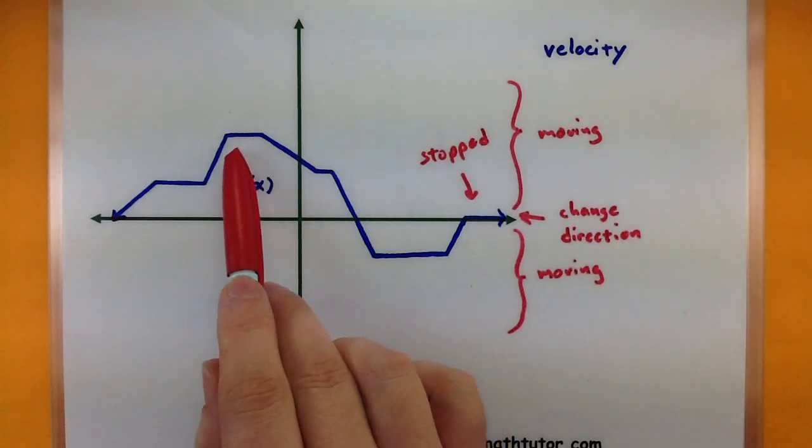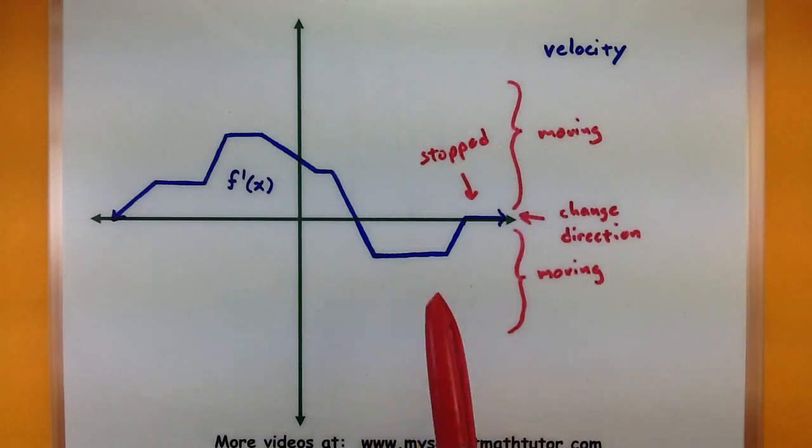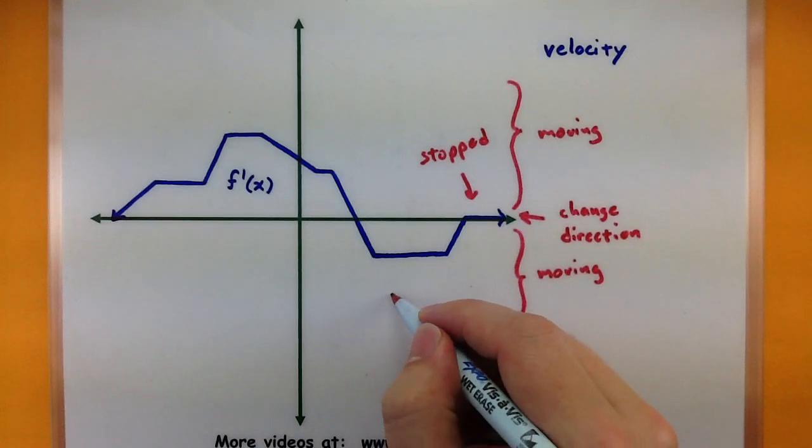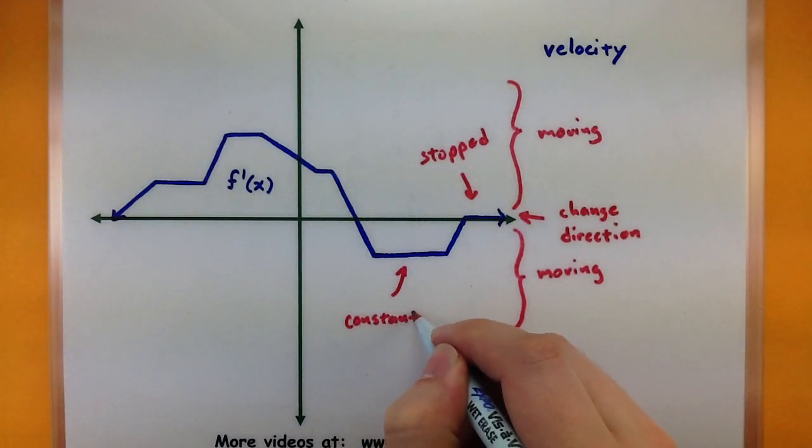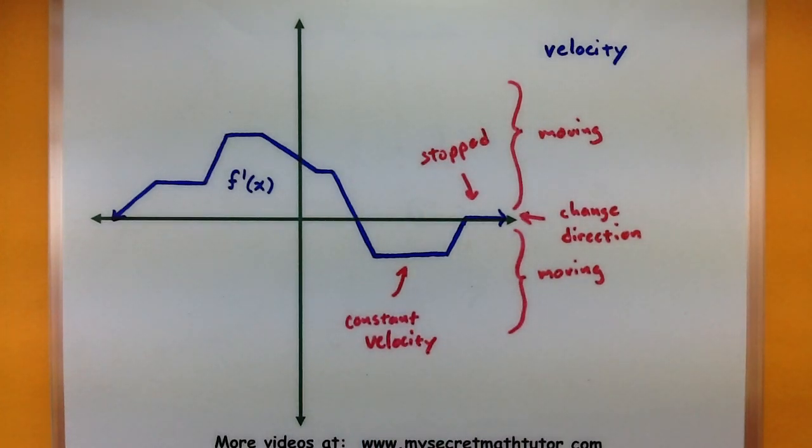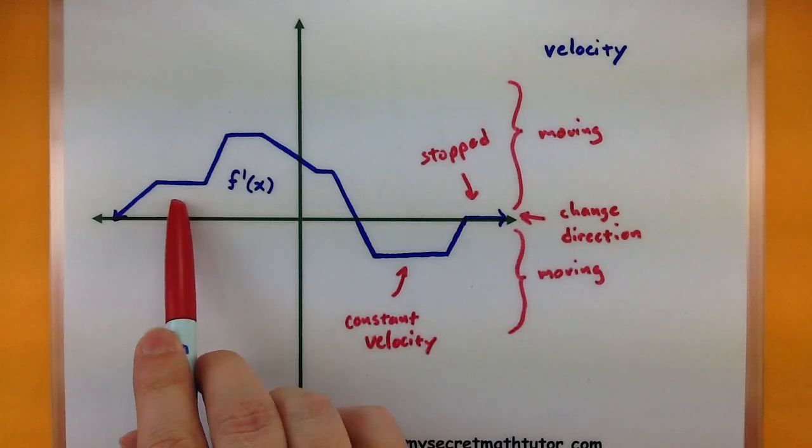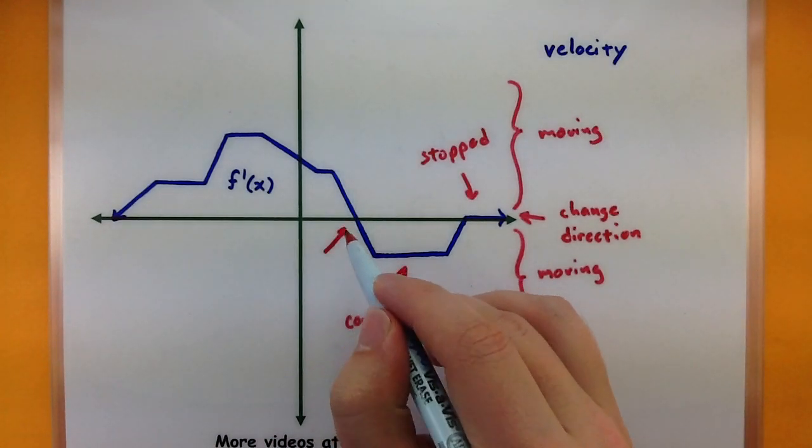So what about these other guys? Well, they are level, but notice how they're in the moving category? This just means that at these places, we have a constant velocity. So I have constant velocity here, here, here, and here, and that's the only spot where it actually stops. This little spot, this is our change in direction.